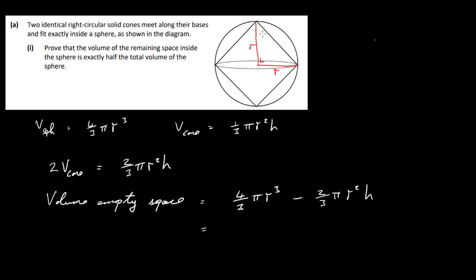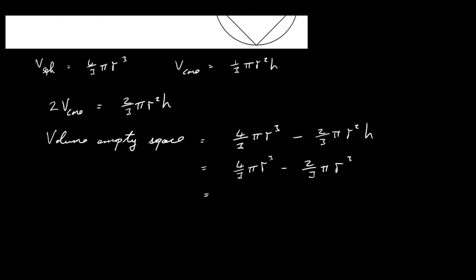Now you've got to remember here that H is just R. The height of the cone here is just the radius of the sphere, which happens to be also the radius of the cone. So we have 4 over 3 pi R cubed minus 2 over 3 pi R squared times R is going to be R cubed. So that will give me 4 over 3 minus 2 over 3, so that's going to be 2 over 3 pi R cubed. 2 over 3 pi R cubed is half the volume, half the volume of the sphere.